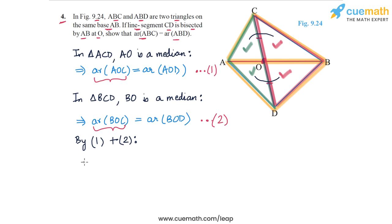On the left side, we will get area of triangle ABC. On the right side, we will get area of triangle ABD. These two areas must be equal. This is what we had to prove. That completes question 4.